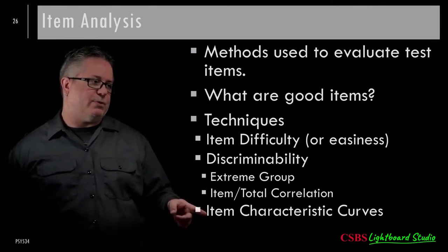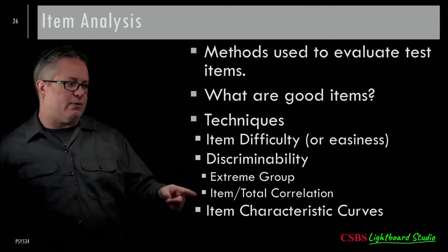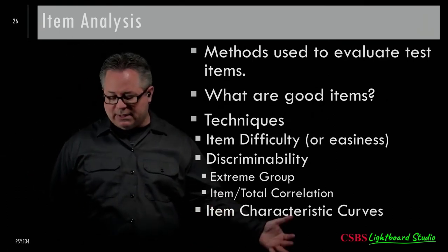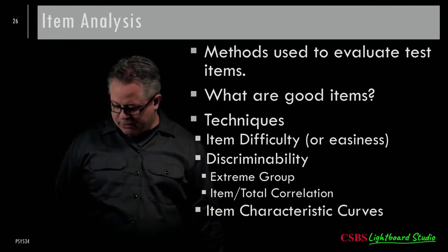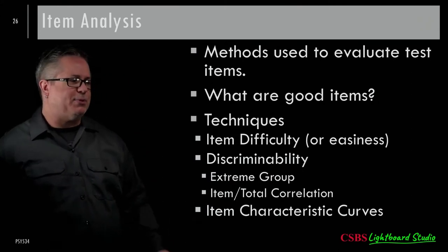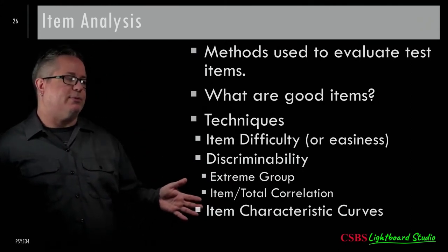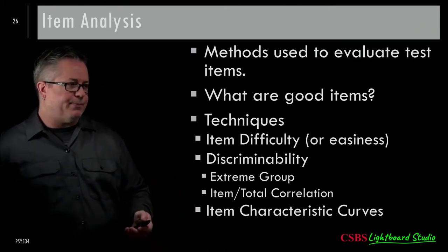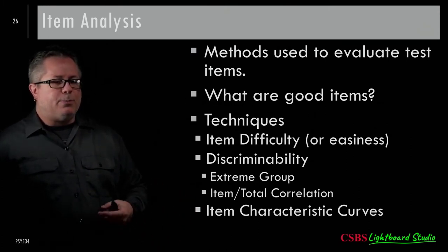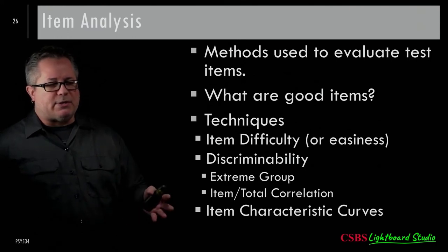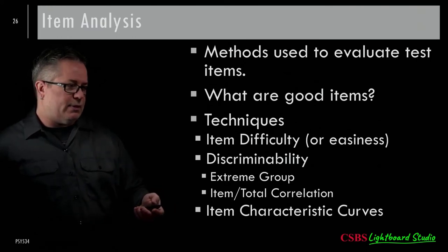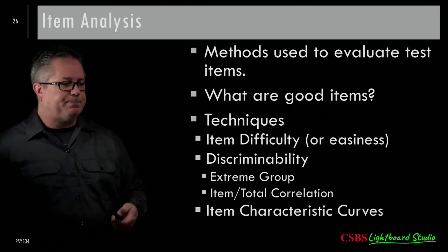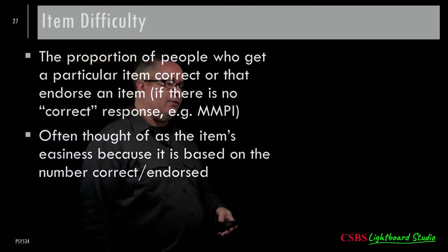We can also look at something called an item characteristic curve to see discrimination and difficulty together on a graph. Item characteristic curves are common in IRT; you see them less in classical test theory, but you can construct empirical item characteristic curves. They test some assumptions of classical test theory and can tell you about both discrimination and difficulty.